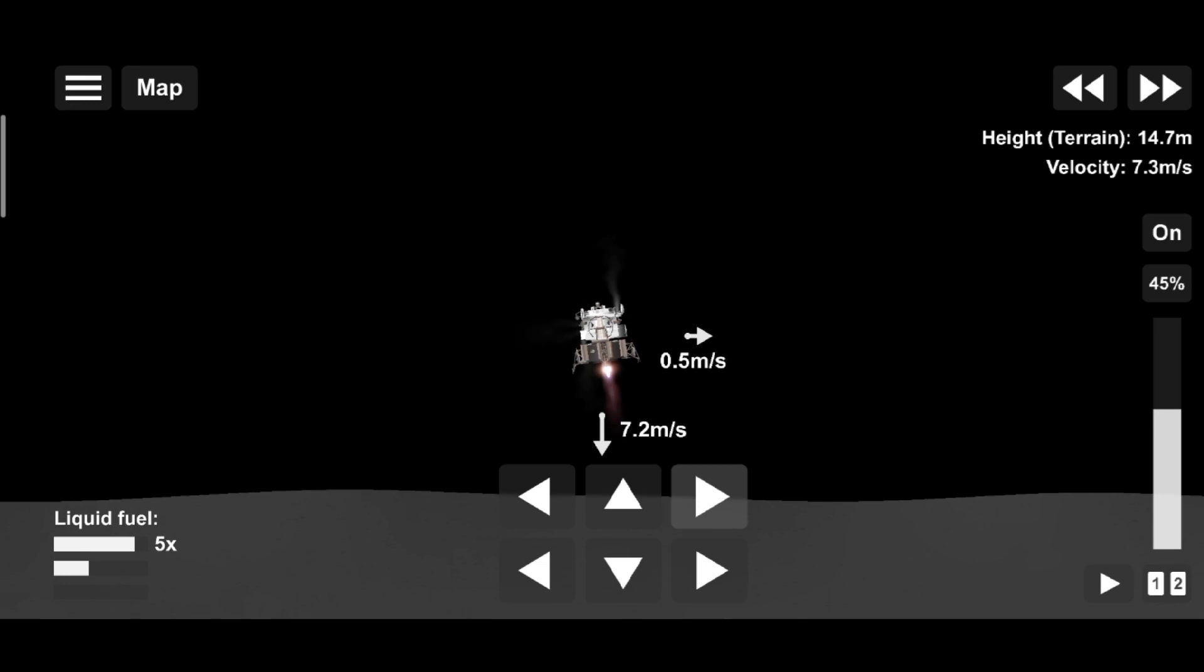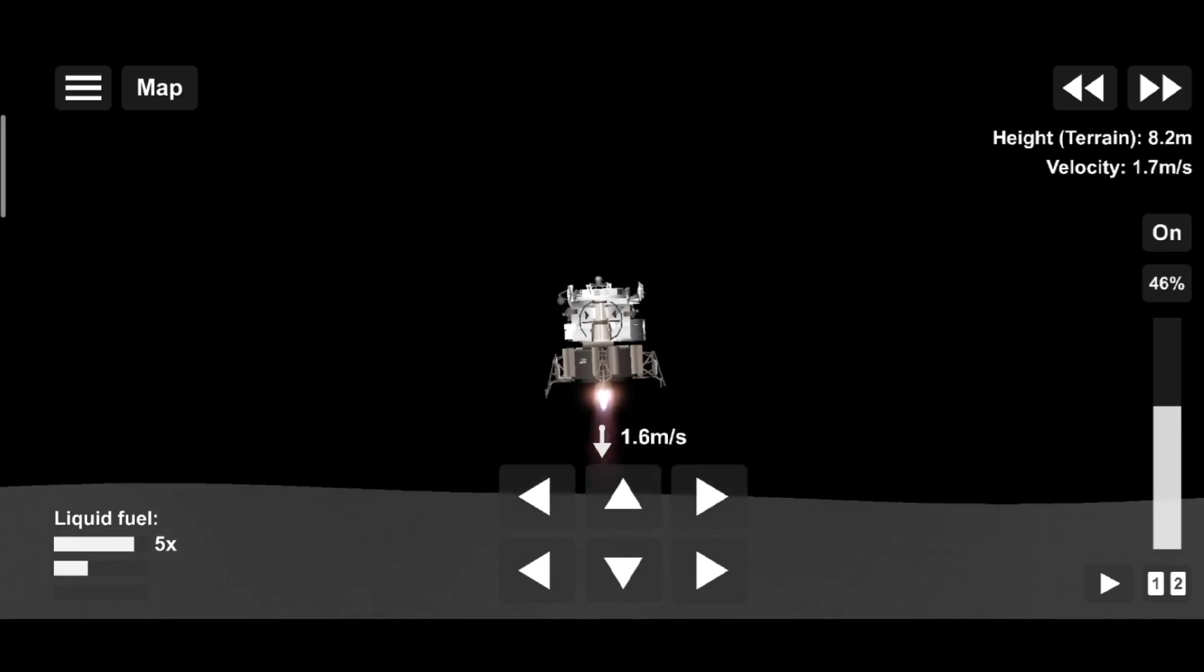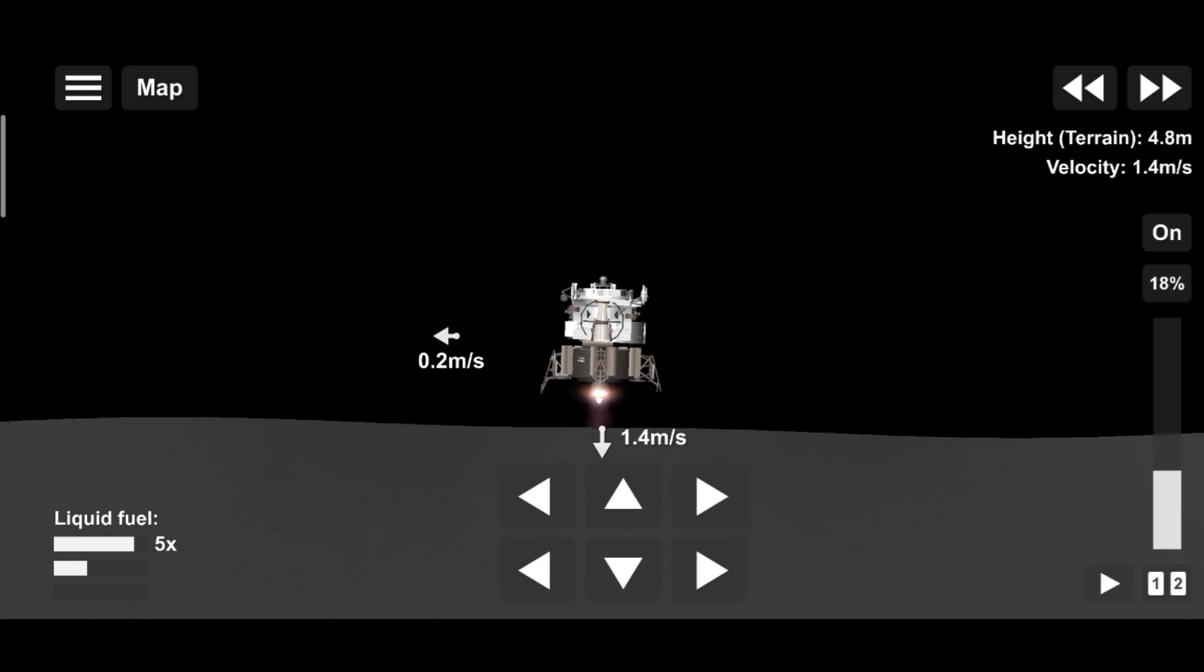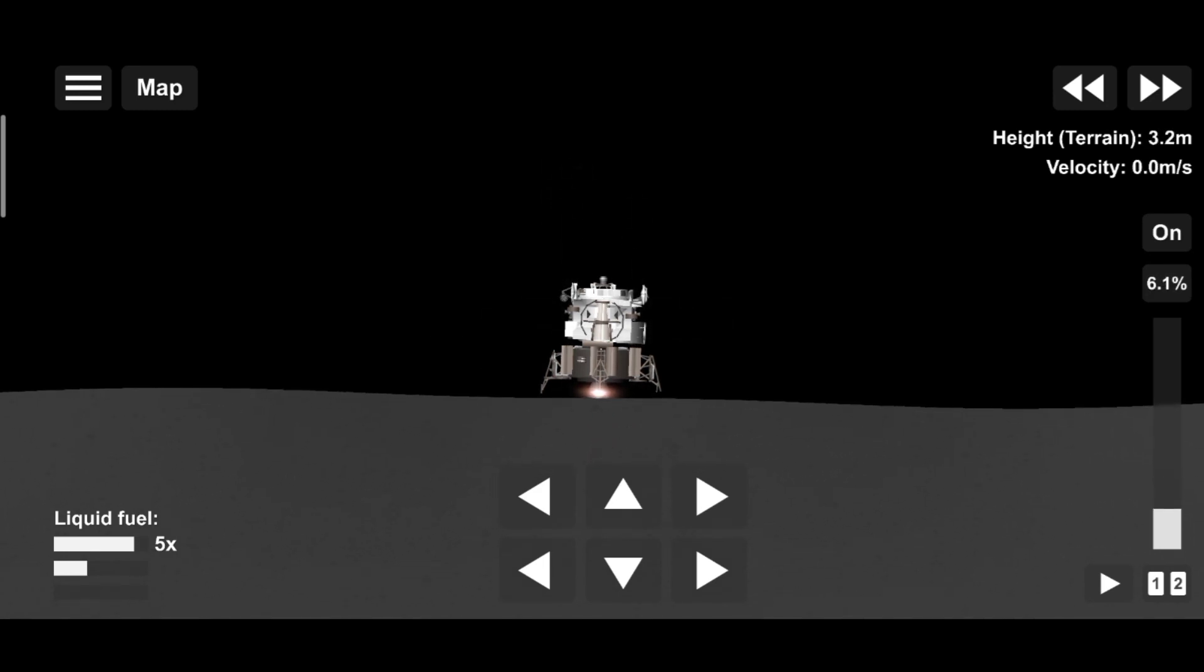Forward. 3 feet down, 2 and a half. Picking up some dust. Faint shadow. 4 forward. Drifting to the right a little. 30 seconds.